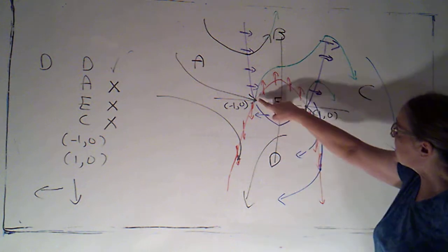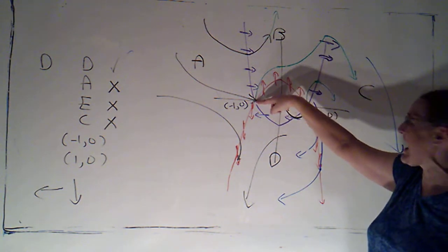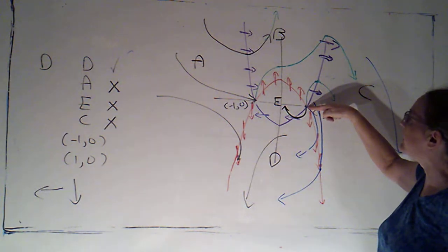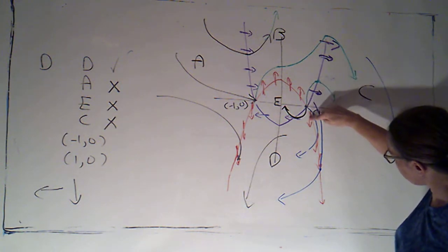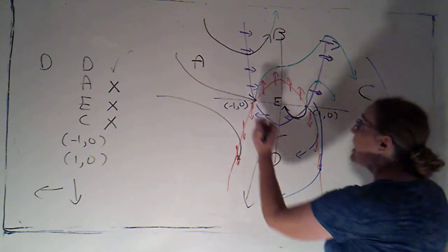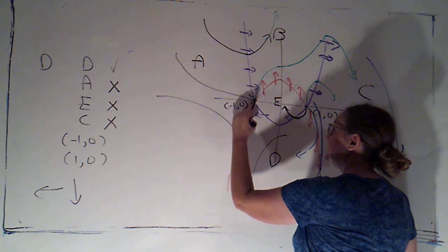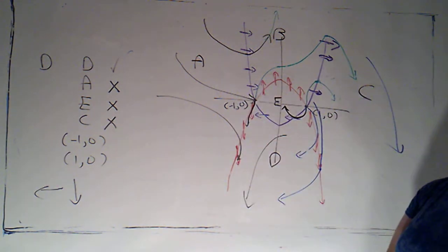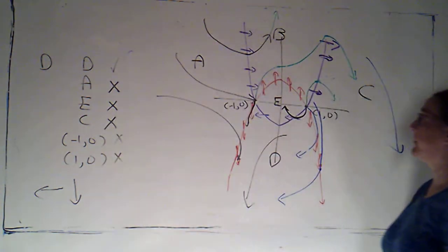Could I approach negative 1, 0? No, because that's at the top and I've got to be going down. Same thing for 1, 0. In fact, I've shown here that I could start at 1, 0 and go away from there. I could also here, start at 1, 0 and go left and down, like so. But I can't approach either of those.